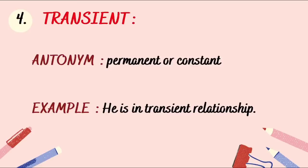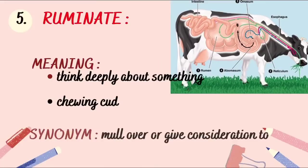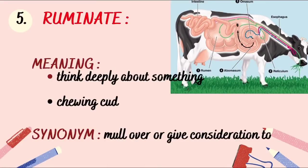Example: 'He is in a transient relationship,' which means he is in a temporary relationship with someone. The next vocabulary is 'ruminate.' Ruminate means to think deeply about something. When you think about something or someone deeply, it means to ruminate.